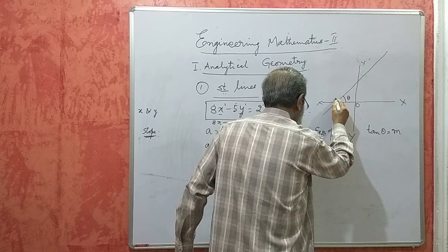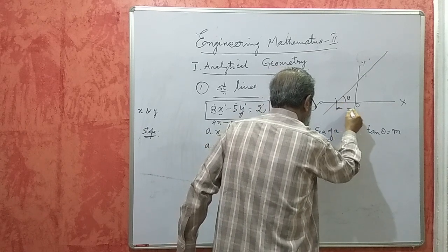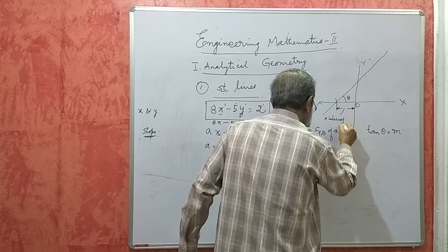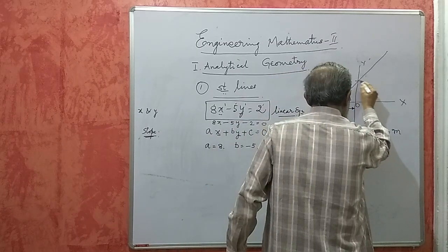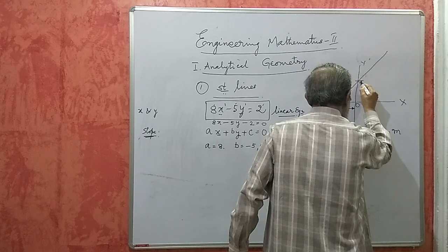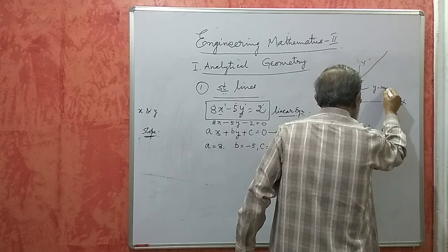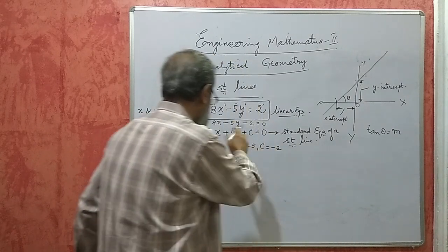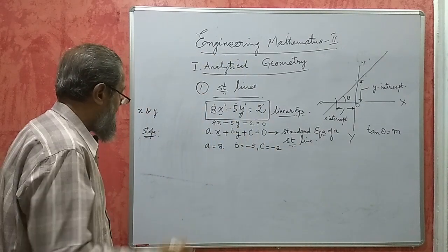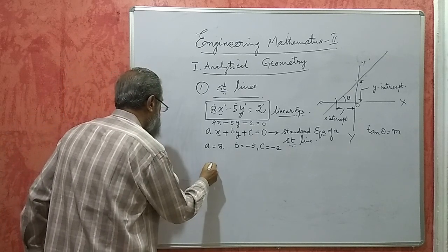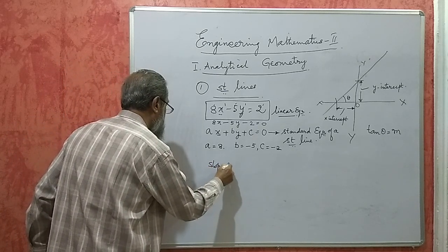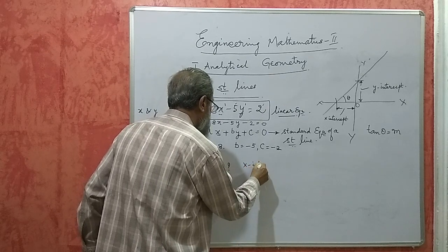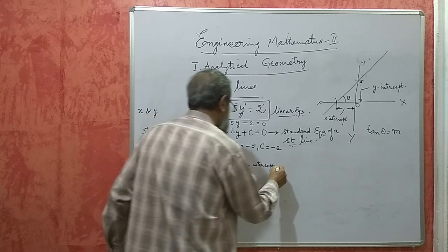The length that the line cuts on the x-axis is called the x-intercept, and the length from the origin to where the line meets the y-axis is called the y-intercept. Given an equation, they can ask us to find the slope, the x-intercept, and the y-intercept.